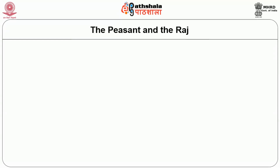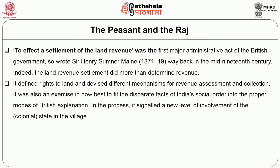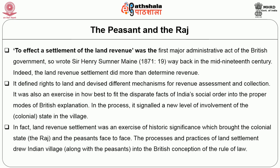The Peasant and the Raj I. To effect a settlement of the land revenue was the first major administrative act of the British government, so wrote Henry Sumner Maine way back in the mid-19th century. Indeed, land revenue settlement did more than merely raise revenue. It defined the rights to land and devised different mechanisms for revenue assessment and collection. It also was an exercise in how best to fit the disparate facts of Indian social order into proper modes of British explanation. In the process, it signaled a new level of involvement of the colonial state in the village. Land revenue system was an exercise of historic significance which brought the colonial state — the Raj — and the peasants face to face.